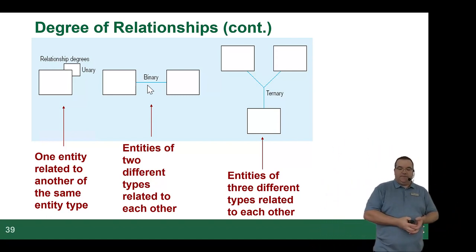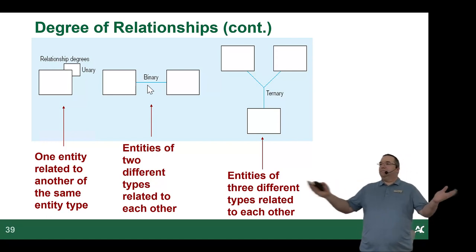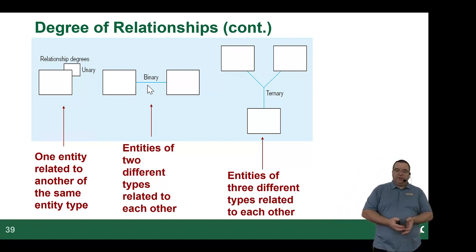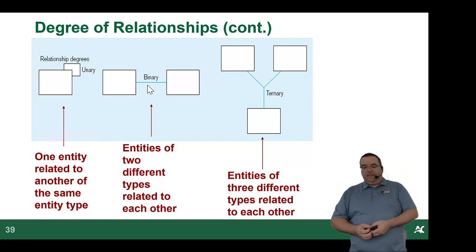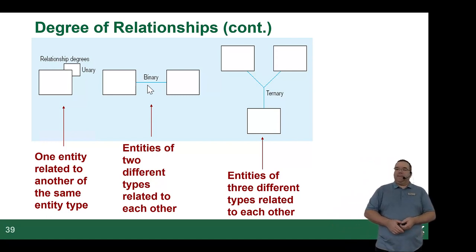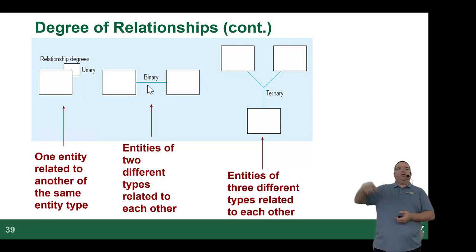A binary relationship is when there are two different entity types related to each other — for example, student and locker. A ternary relationship is when you've got three different entities related to each other. You'll have entities that have lots of relationships tied to them — it looks like a big star — but each of the entities in there are only participating in a binary relationship with each table. Rarely will you have three tables that are also related to each other.